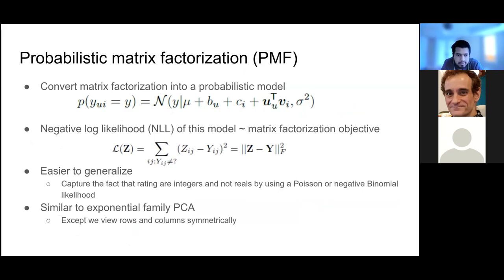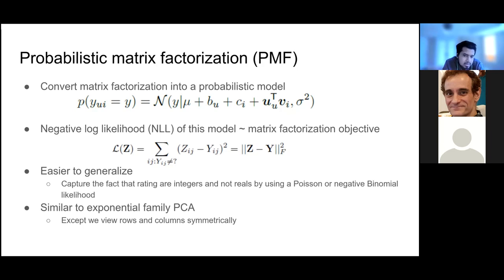So far we've seen matrix factorization, which is somewhat discrete in nature. We can also use probabilistic matrix factorization (PMF), which converts matrix factorization into a probabilistic model using the parameters as hyperparameters. We use a Gaussian model where the mean is y and the variance is the prediction equation. If we take the negative log-likelihood, the exponent term disappears, and the remaining term is similar to the matrix factorization objective.